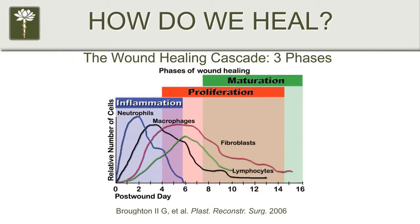So how do we heal? This is a diagram of wound healing. This process occurs virtually the same way everywhere in the body, whether you have a liver injury, cut your finger open, sprain a ligament, or whatever. We start with the inflammatory phase. The first four to six days is inflammation.